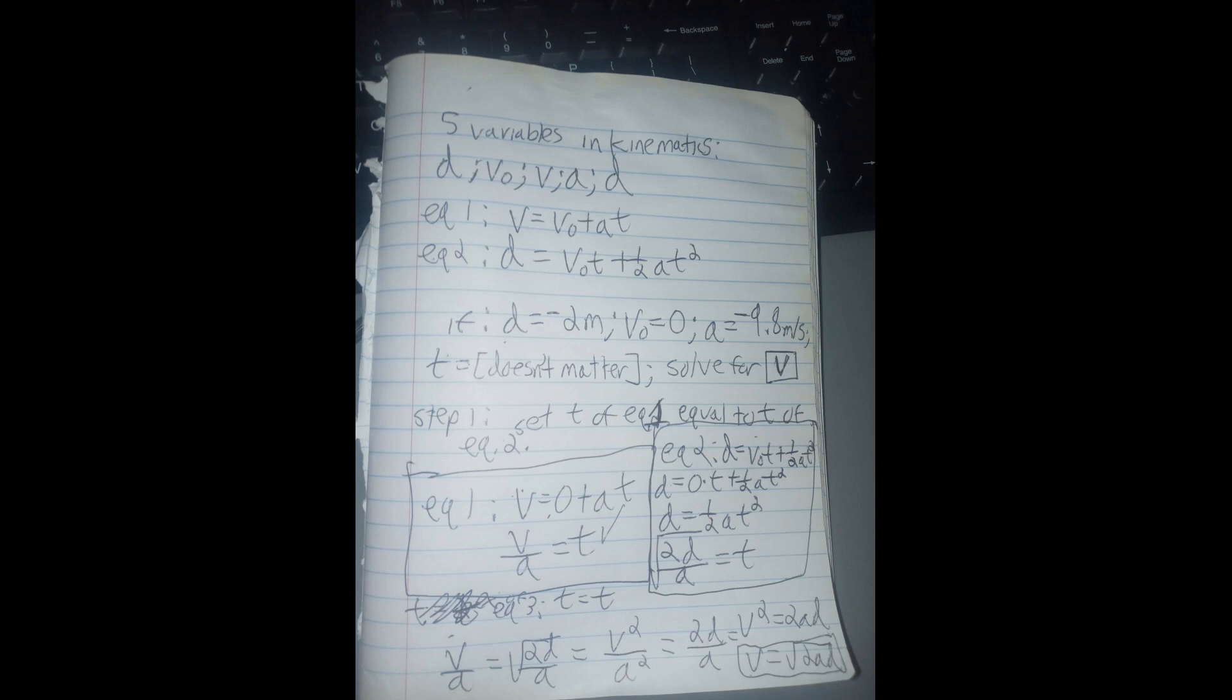Now, again, I recommend writing this down. We will rewrite equation one, v equals v-naught plus at. Question, what is v-naught? Again, if we just drop a ball, v-naught equals zero. So v in equation one equals acceleration times time. We solve for time. We get v divided by a equals t. That's equation one, the simpler one.